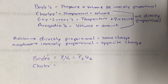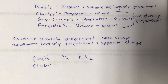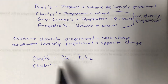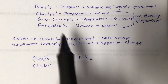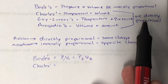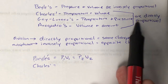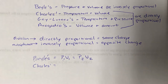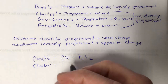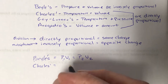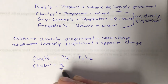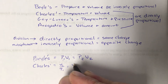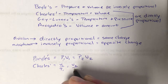Charles' law is about temperature and volume, so we have T1 and V1 on the left side and T2 and V2 on the right side. Since this law is directly proportional, it's all about division. So we set it up as V1 over T1 equals V2 over T2.